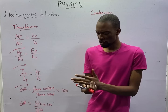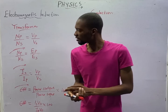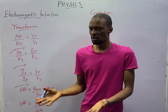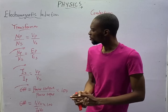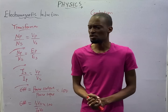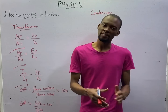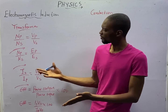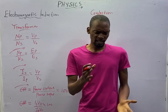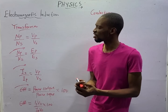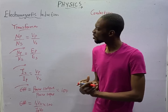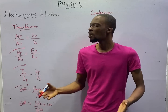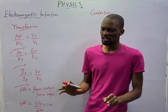A transformer has the number of turns in the primary, the number of turns in the secondary, voltage in the primary, and voltage in the secondary. For step-up, voltage in the secondary should be more than that of the primary. Voltage and current should be inverse in a transformer, which means if the voltage in the secondary is more, the current should be more.